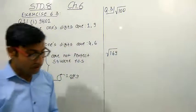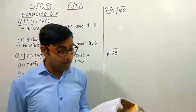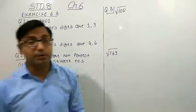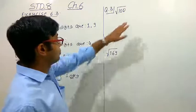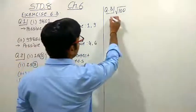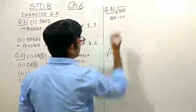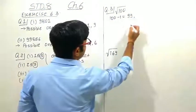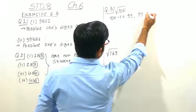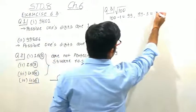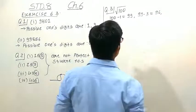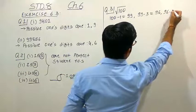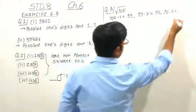Now let us study question number 3: find the square roots of 100 and 169 by the method of repeated subtraction. Here we apply the method by subtracting consecutive odd numbers. Starting with 100: 100 minus 1 equals 99 (step 1). Then 99 minus 3 equals 96 (step 2). Then 96 minus 5 equals 91 (step 3).